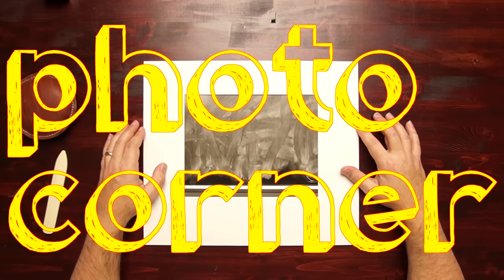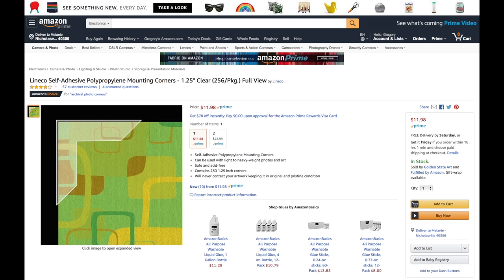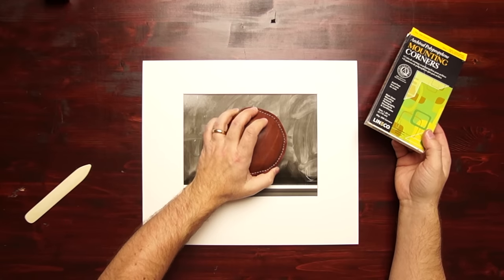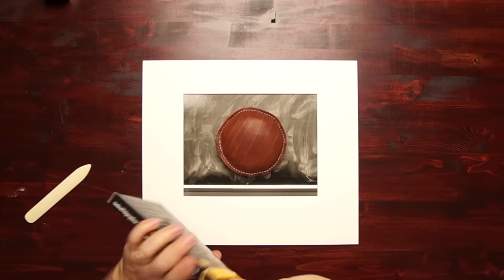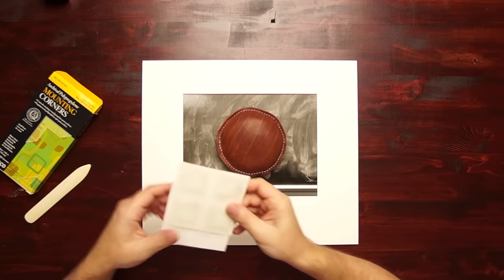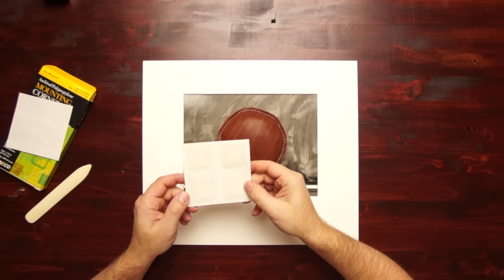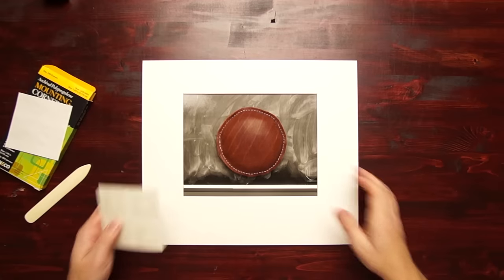Third method I want to show you is the photo corner. And those tend to come in a box like this. So I've got the print centered. I'm going to weigh it down. There are two types of these. You can get the paper, which tend to be gummed, and you have to moisten the adhesive. These are polypropylene. They are acid-free and archival. And they are self-adhesive.